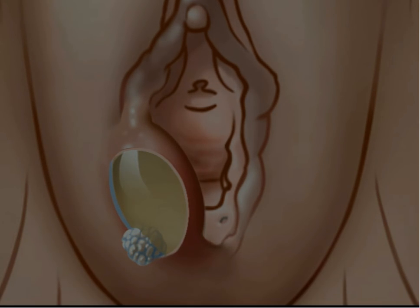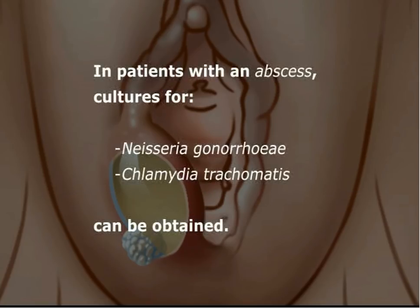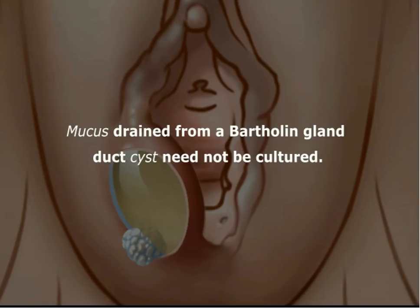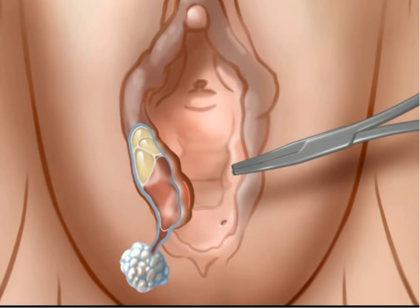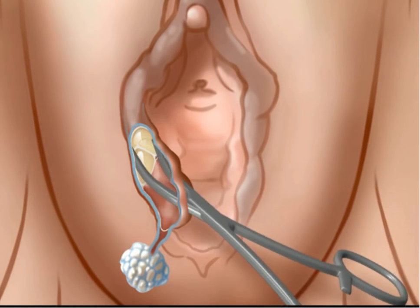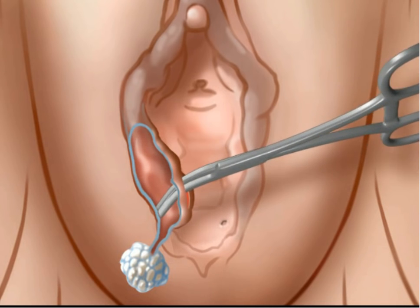Copious mucus or pus under pressure will be ejected upon knife blade insertion. For these reasons, providers should use protective eyewear. For patients with an abscess, cultures for Neisseria gonorrhea and Chlamydia trachomatis can be obtained from spontaneously extruded pus. Mucus drained from a Bartholin gland duct cyst need not be cultured. The tip of a small hemostat is placed within the cavity and the tips are opened and closed to lyse adhesions and open loculations of pus or mucus.